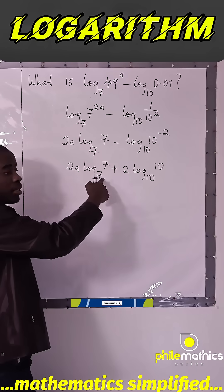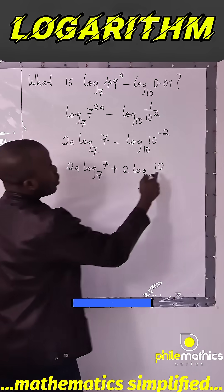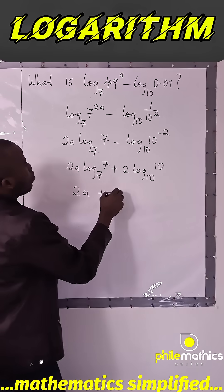From laws of indices, log of a number to the same base is 1. So this is 1, this is 1. At the end of the day we have 2a plus 2.